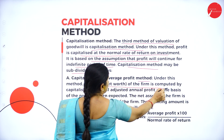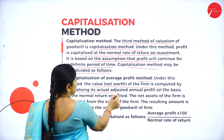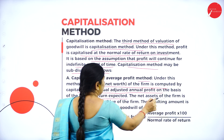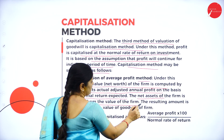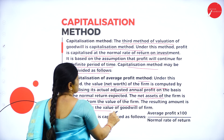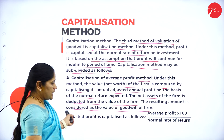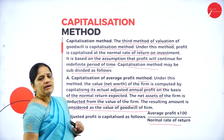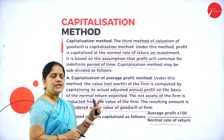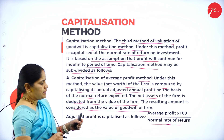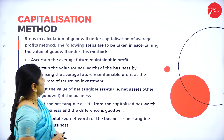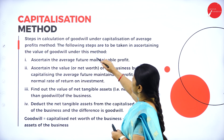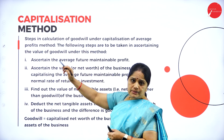Under the capitalization of average profit method, the value of the firm is computed by capitalizing its actual adjusted annual profit on the basis of the normal return expected. The net assets of the firm is deducted from the value of the firm, and the resulting amount is considered as the value of goodwill. The formula is: adjusted profit divided by NRR, multiplied by 100.